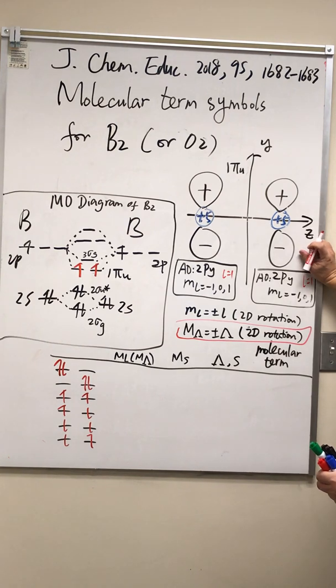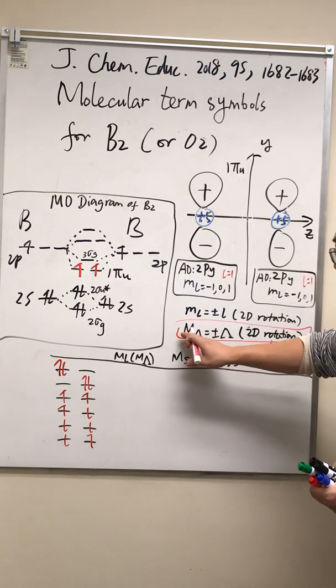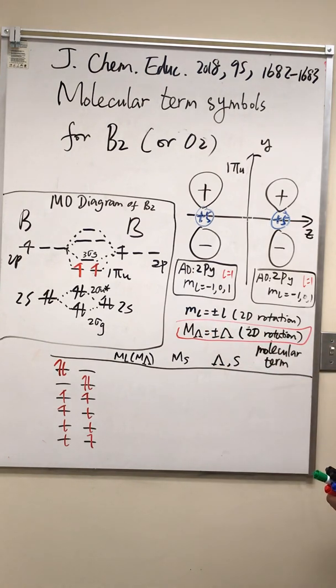When we are talking about these molecular term symbols, we're looking at the Pi orbitals, not a P orbital. This is a Pi orbital. It can only rotate about the z-axis, but not about the x or y-axis. That's why it's a two-dimensional rotation, and m sub lambda can only be plus minus lambda.